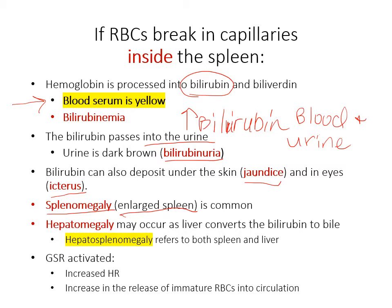Because you have an increase in bilirubin, that bilirubin eventually reaches the liver. From the normal process, we know the bilirubin will be converted to bile once it reaches the liver. So we have an increase in bilirubin going to the liver, the liver becomes overworked and may also increase in size — termed hepatomegaly. When both the spleen and liver are overworked and enlarged, we call that hepatosplenomegaly, another complication of hemolytic anemias where red blood cells lyse inside the spleen.